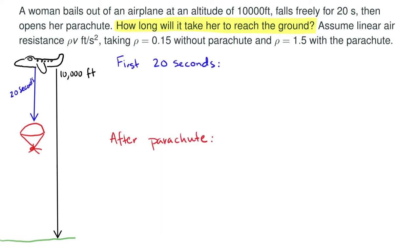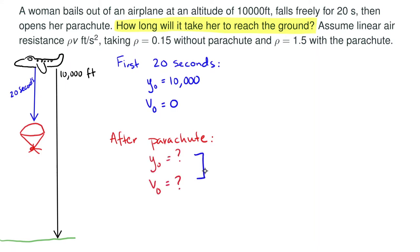For the first 20 seconds we know that the initial position was 10,000 feet because that was the altitude of the plane. And since she's just jumping out of the airplane, her initial velocity is 0. After she's been falling for 20 seconds, we'll have a new height and some initial velocity. The way we'll find these two quantities is through working through our first case.